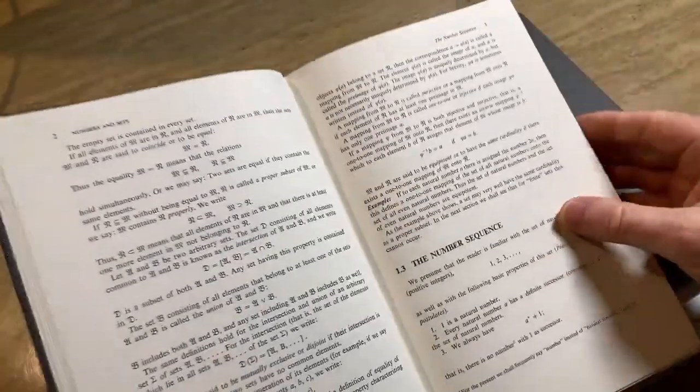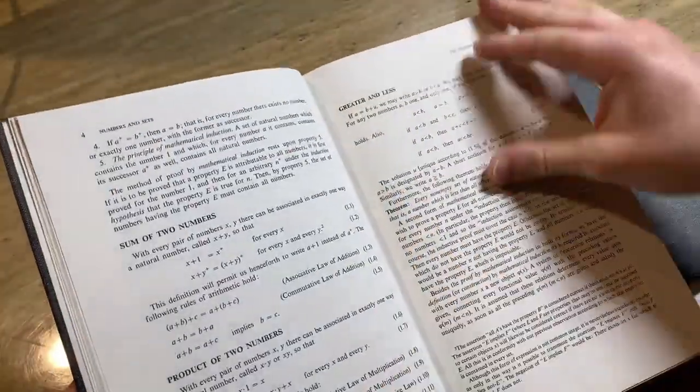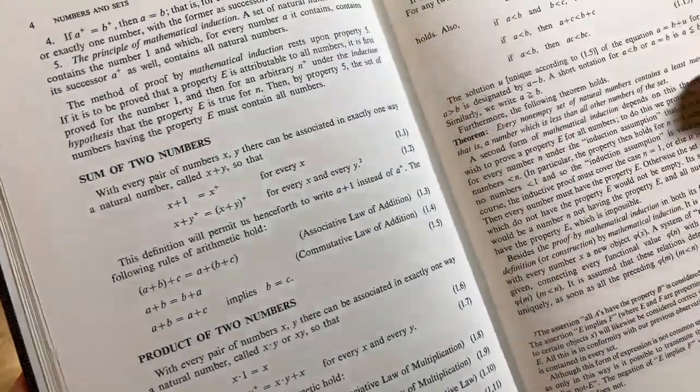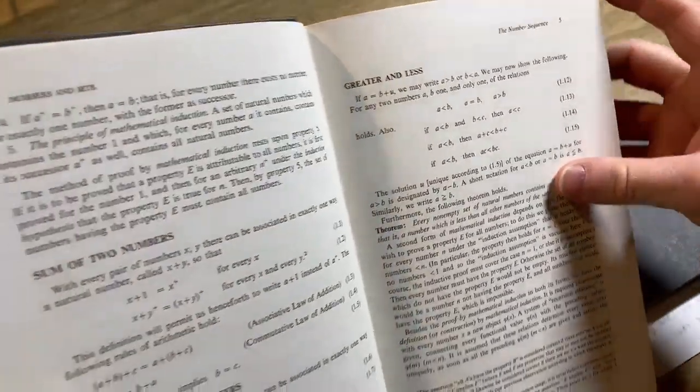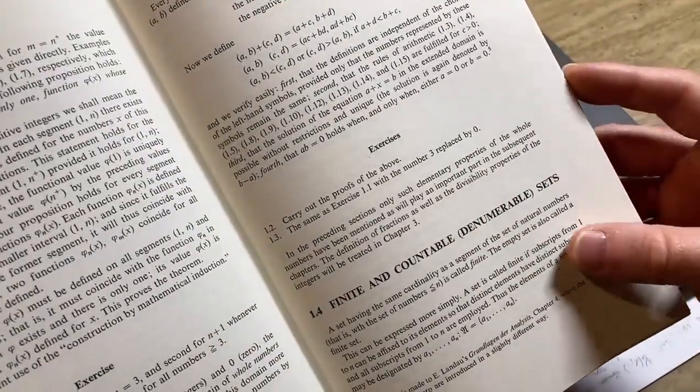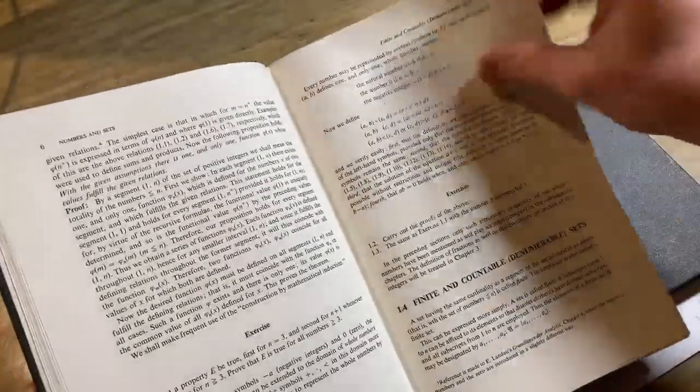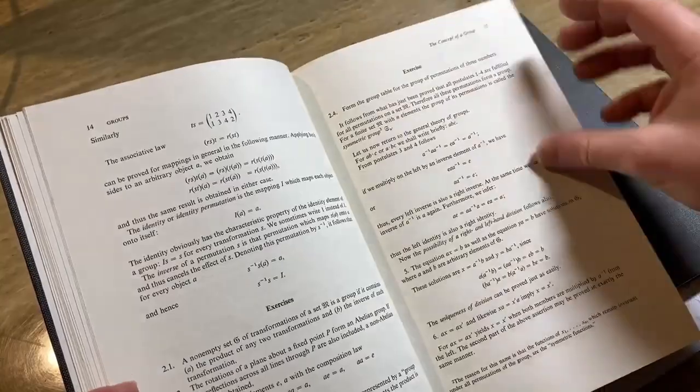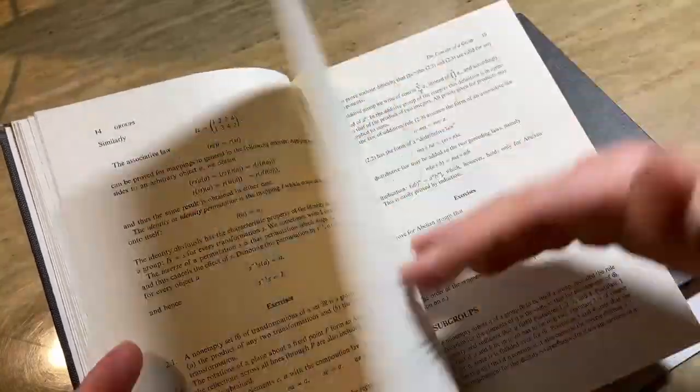The number sequence it says. Let's turn the page. Sum of two numbers. Product of two numbers. So really basic here, you see. Greater and less. Finite and countable and denumerable sets. Let's skip ahead. I want to look at the group theory.